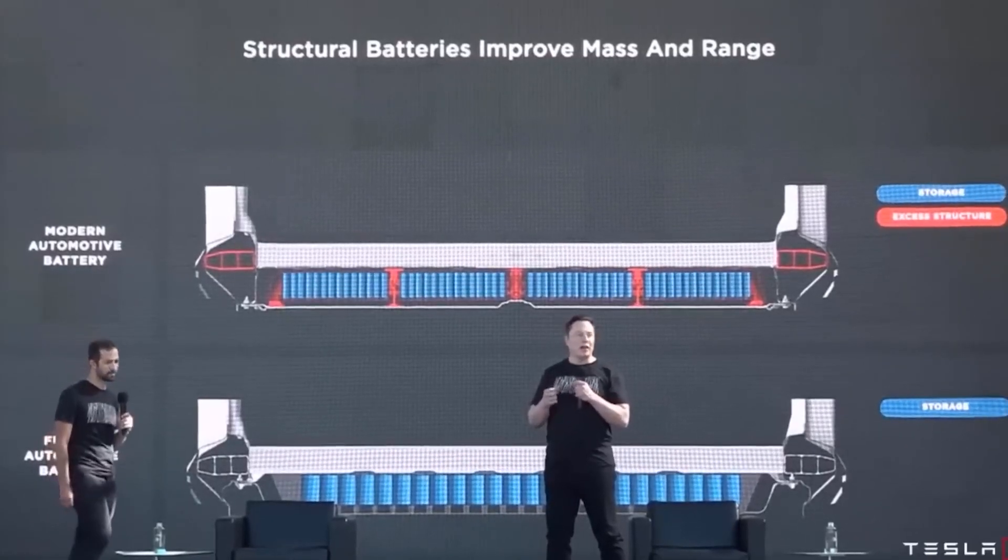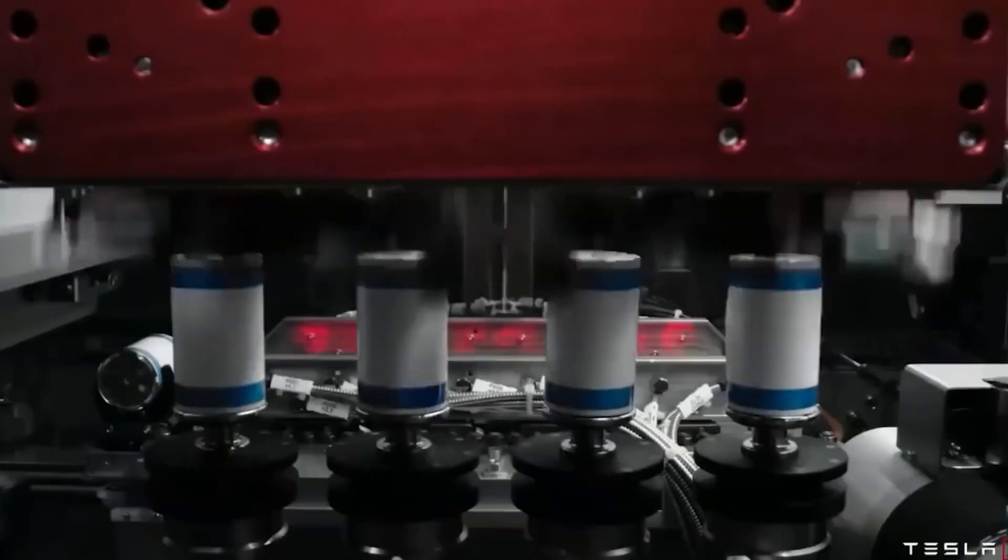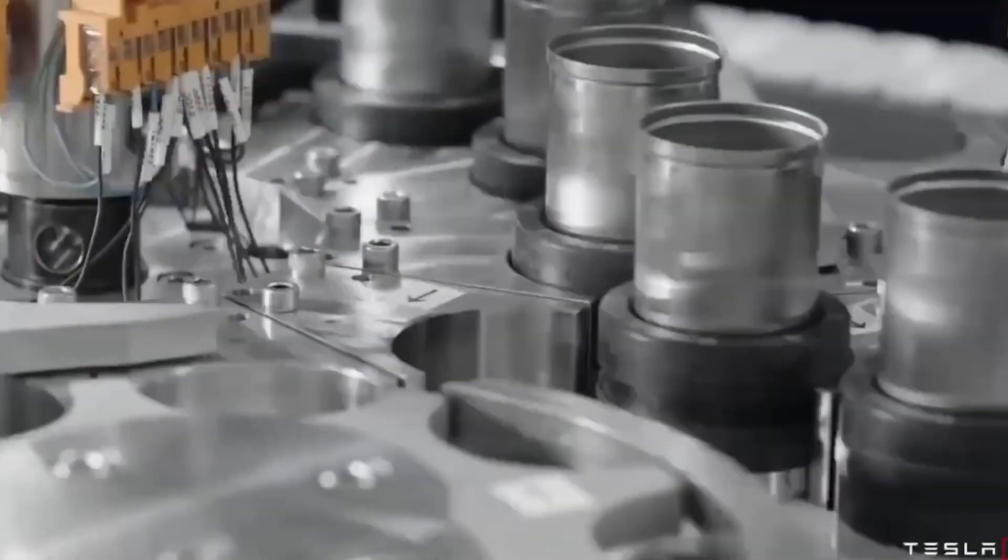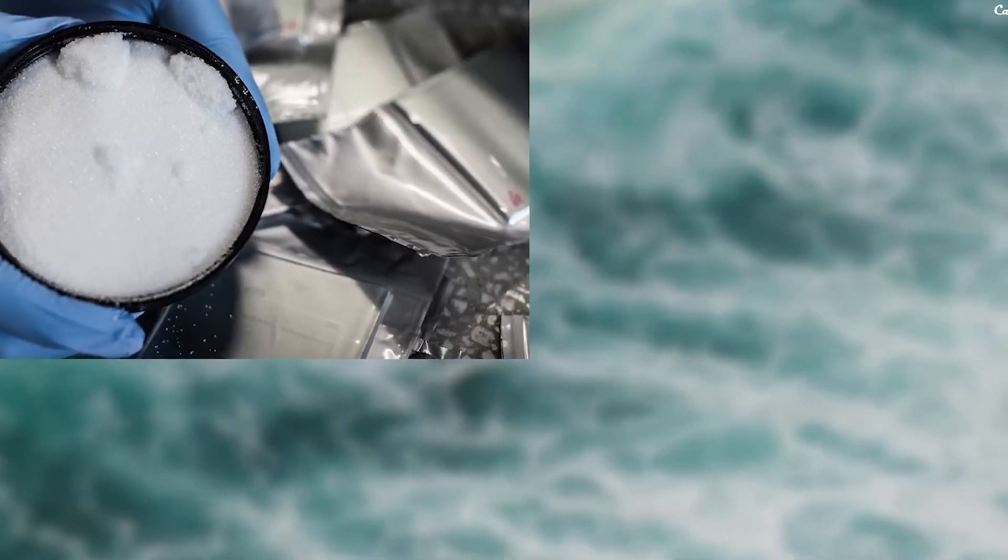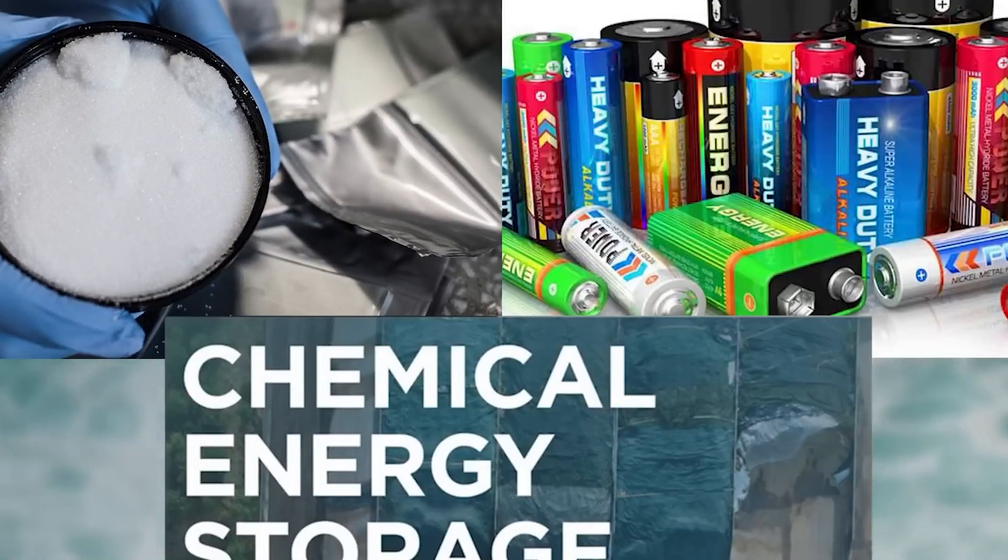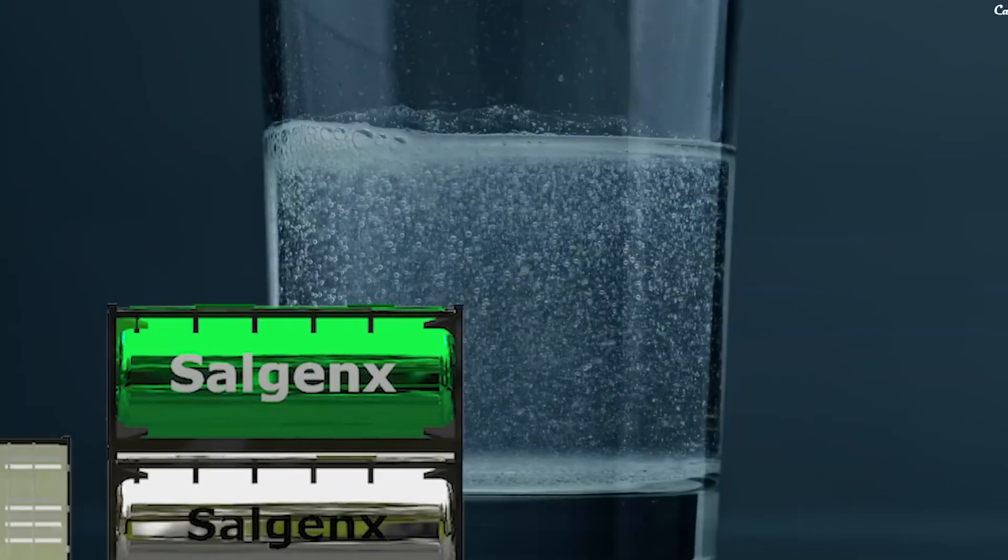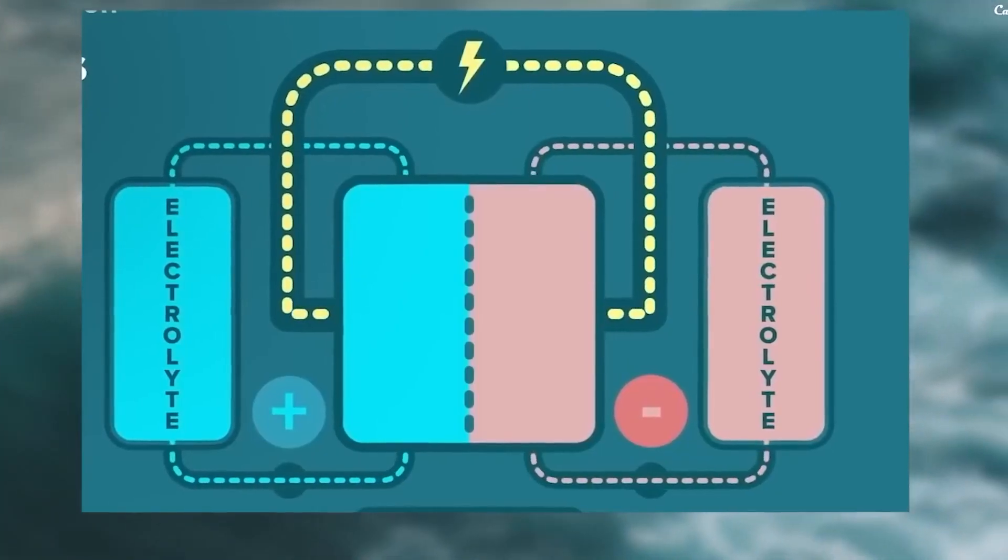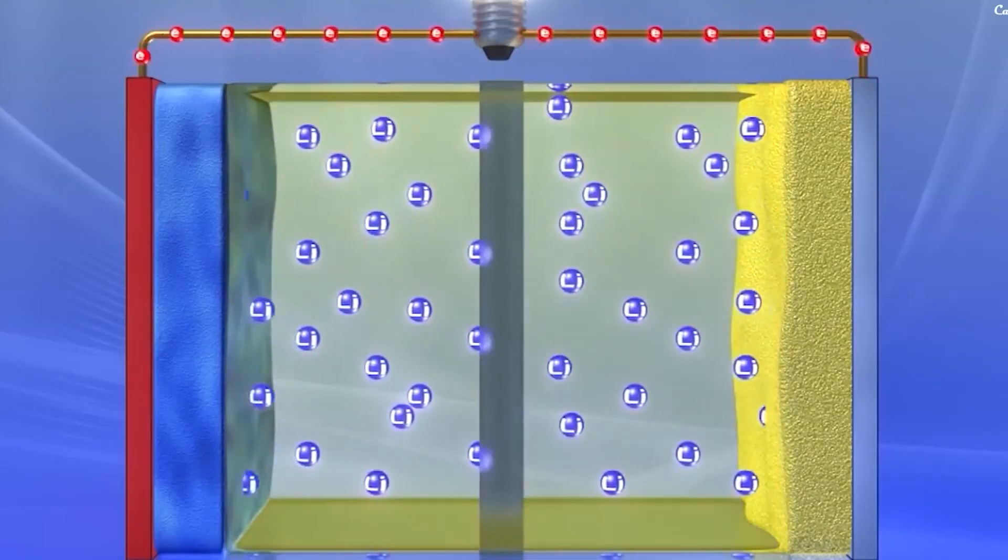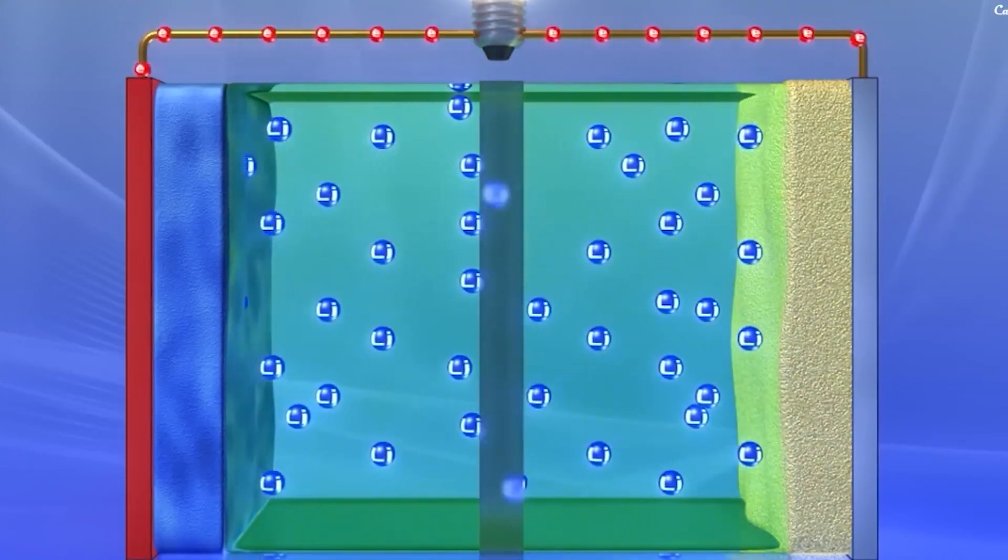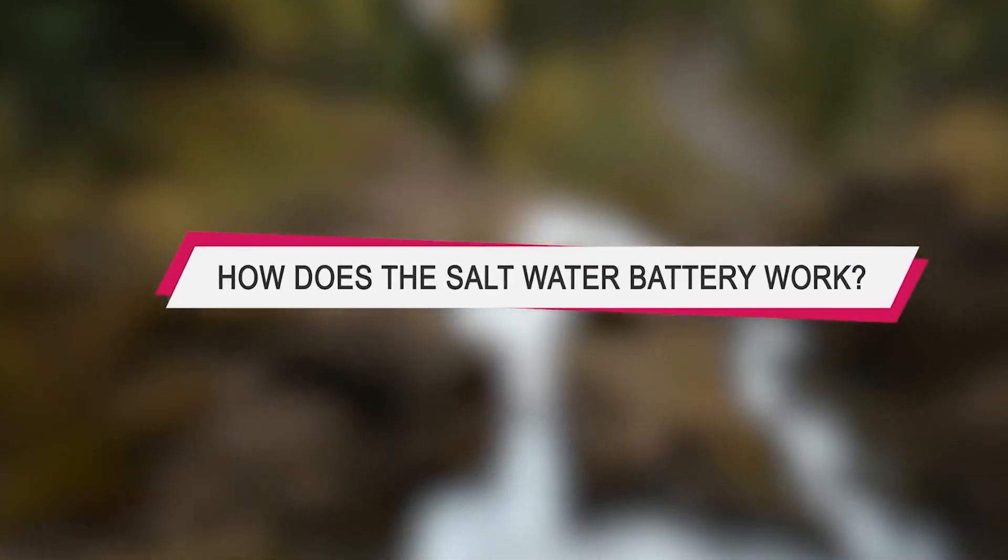Elon Musk's latest revelation is set to revolutionize the world of energy storage: saltwater batteries. These batteries are not only safe and non-flammable, but also boast long lifespans and eco-friendly properties. Unlike traditional lithium-ion batteries, which rely on scarce and volatile raw materials, saltwater batteries utilize a mixture of water and salt as their electrolyte. But how do they actually work?